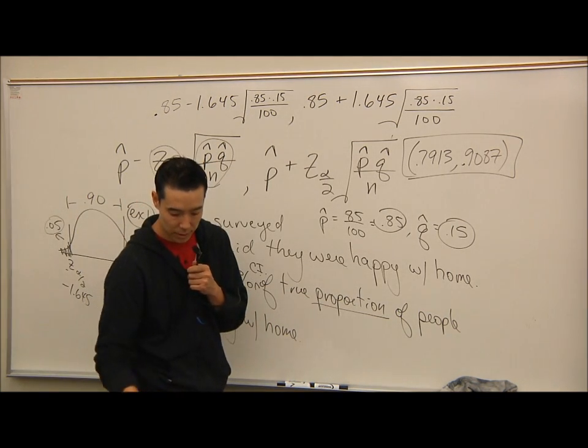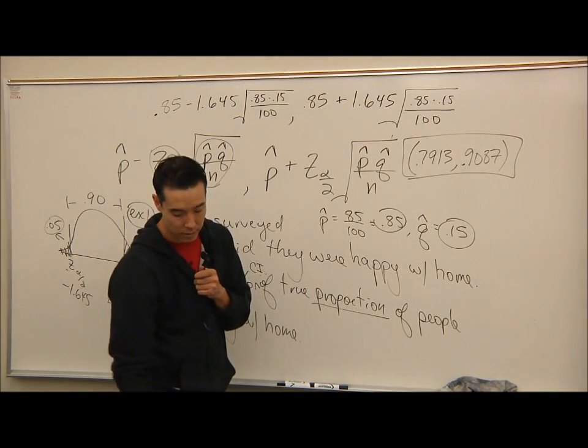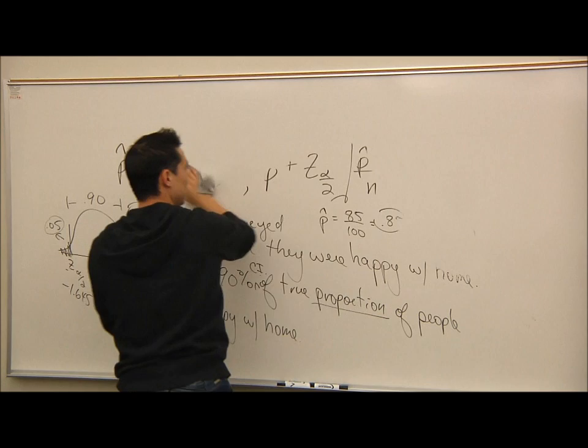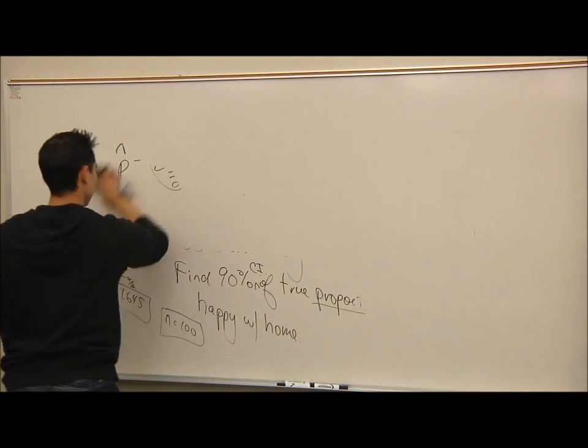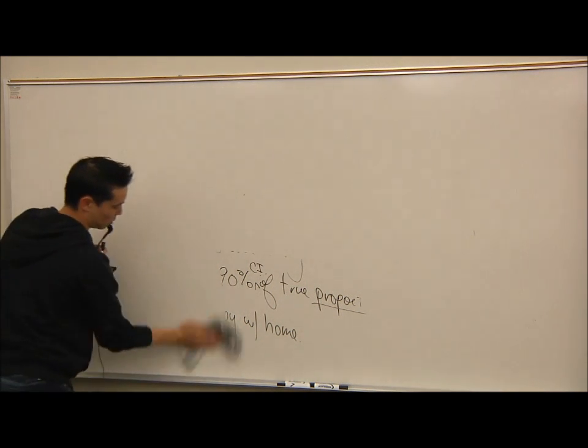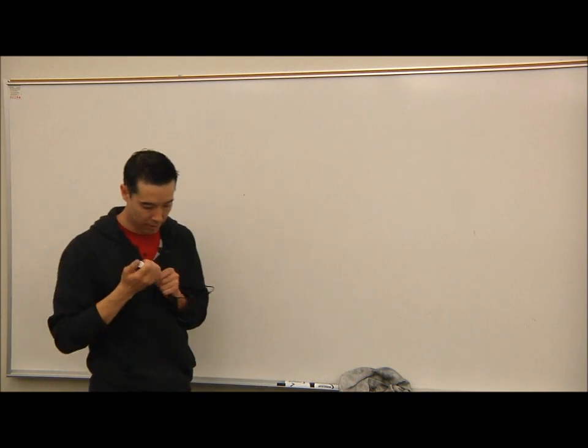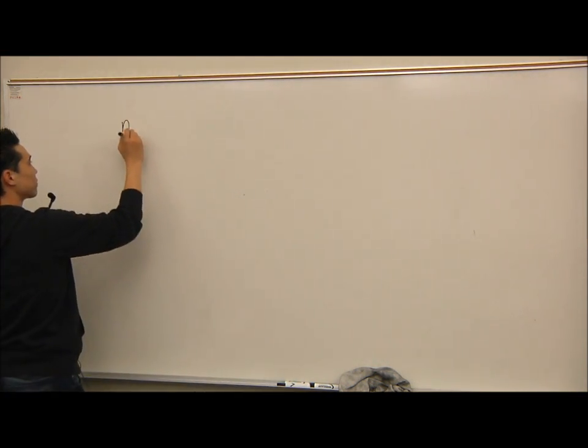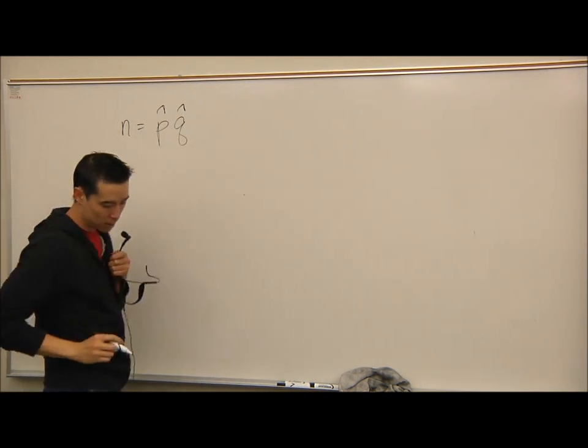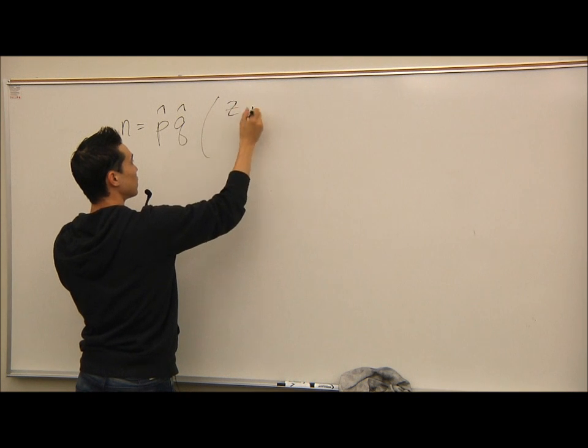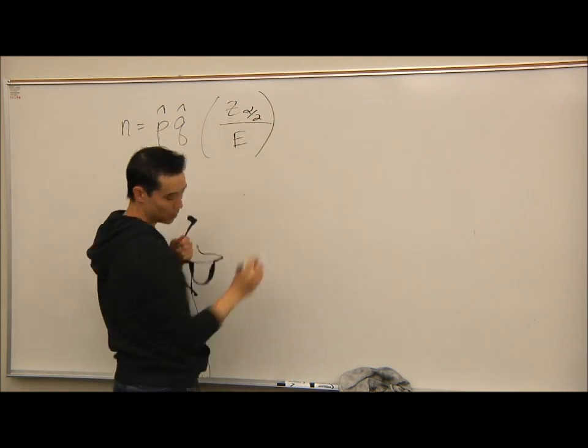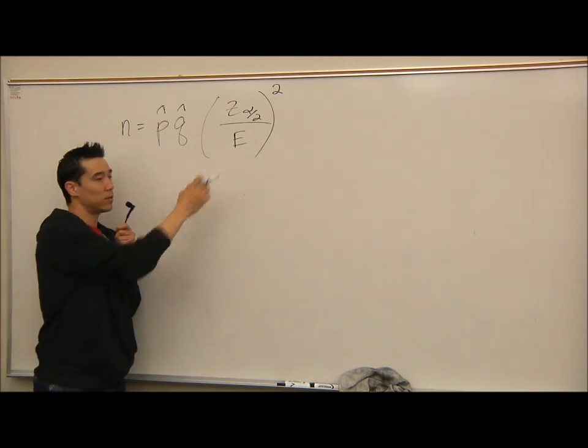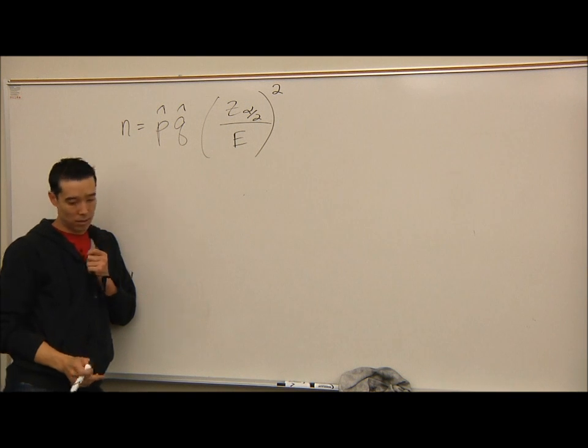If you also go back in your notes a couple of sections ago, we also had a minimum sample size needed. There is a minimum sample size needed with this section too. Let's take a look at that formula. The minimum sample size needed is N equals P hat times Q hat times parenthesis Z sub alpha over 2 over E all quantity squared. This is your minimum sample size needed, and remember error is your error or accuracy level.